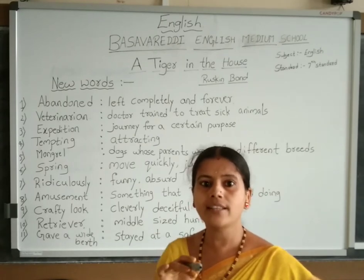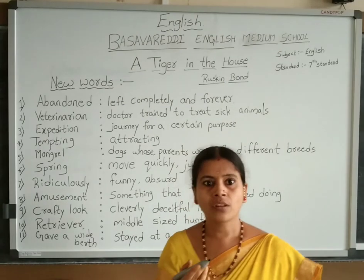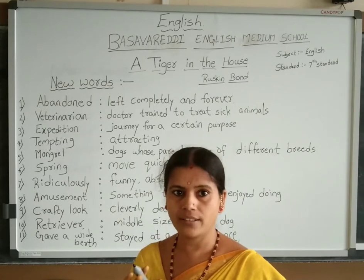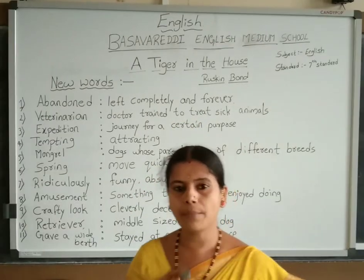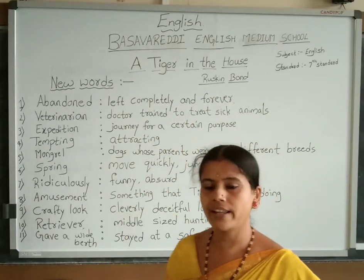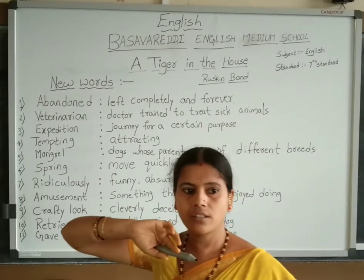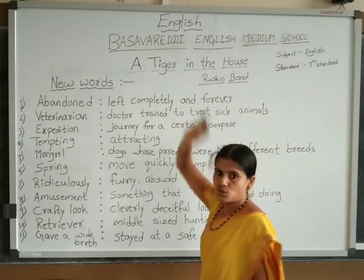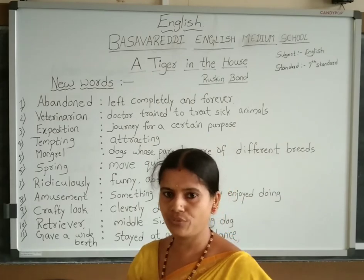In almost all his stories, he used to give details and describe about pets as well as his grandparents, especially his grandfather. Before starting the lesson, I want to give you the summary. This story is very interesting — it is about a tiger cub that eventually grows into a tiger. The story is totally about the tiger, the grandmother, and the grandfather of Ruskin Bond.